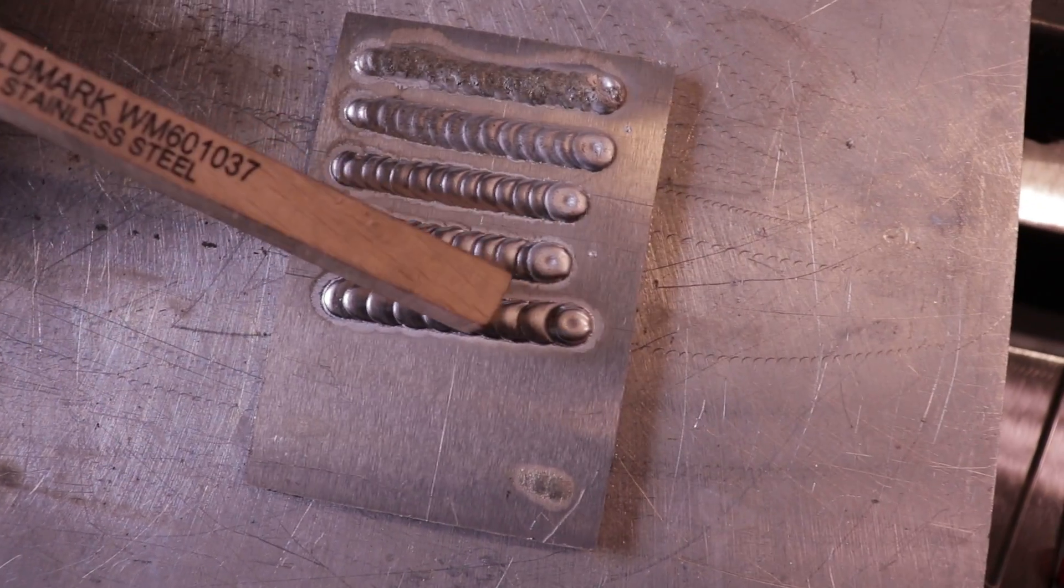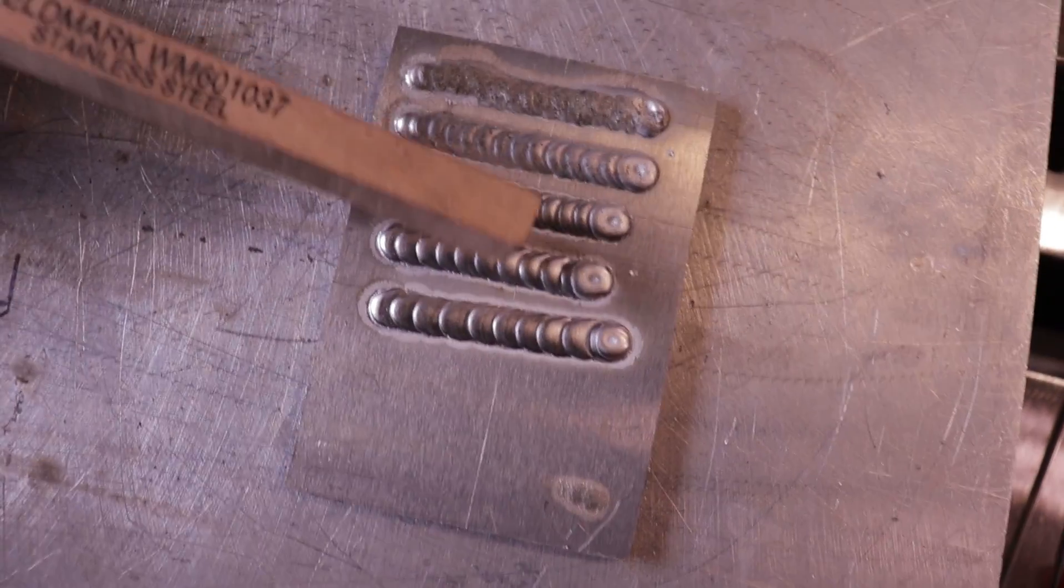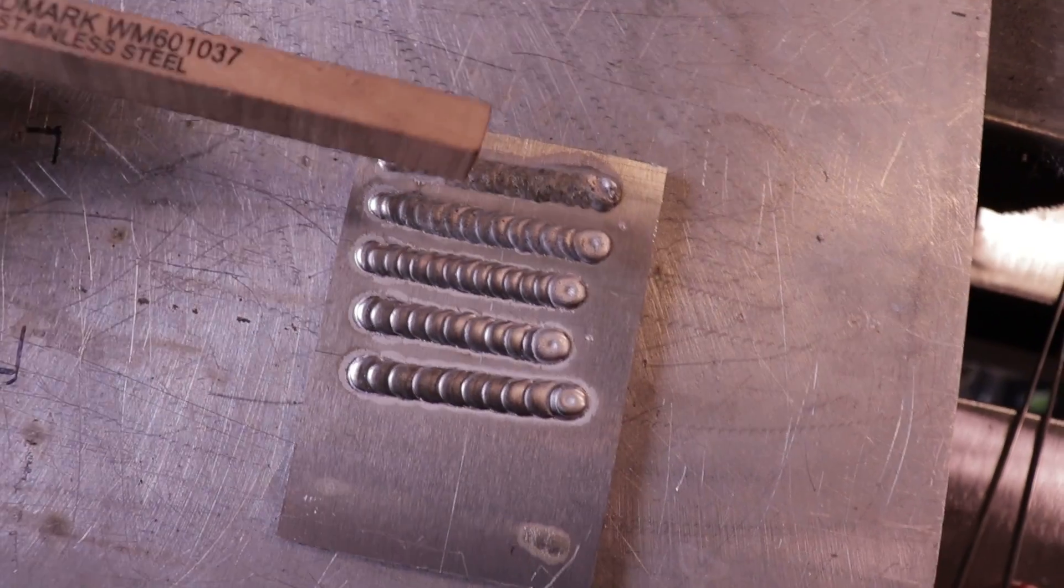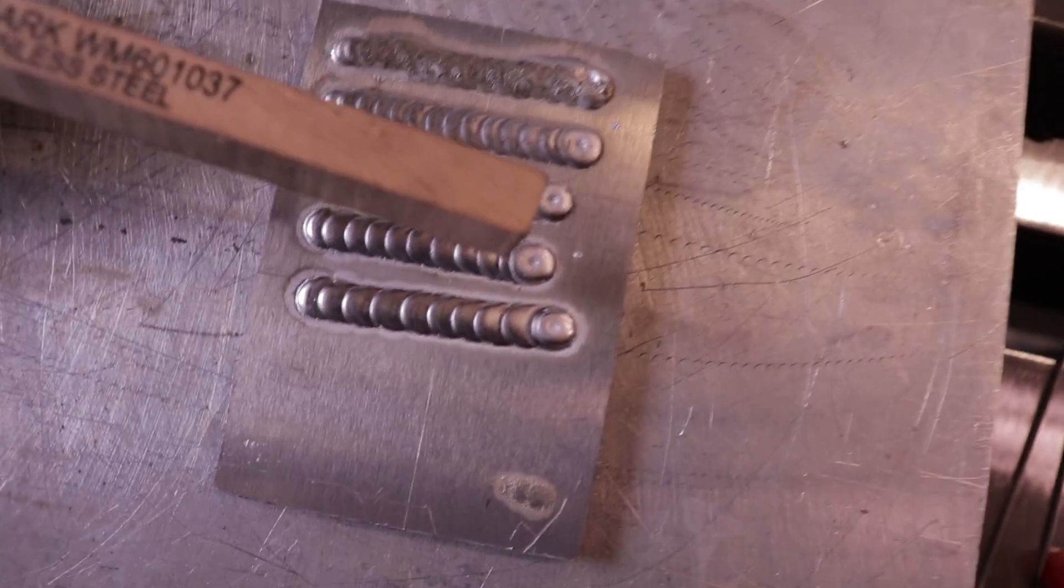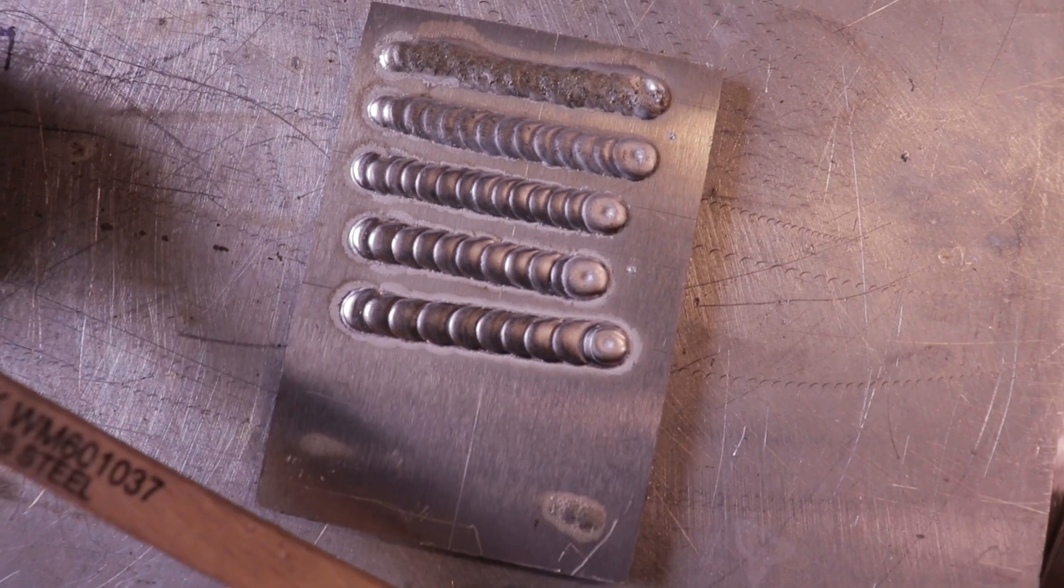It's a mixture between gas flow and AC balance. So I like to set my AC balance somewhere around 70 to 75, and I know that's a good setting on my machines, and then I'll adjust the gas flow after that.